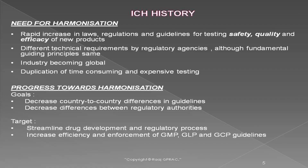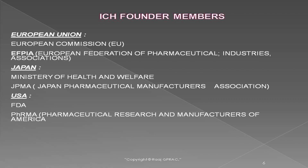The goal was to decrease country-to-country differences in guidelines and between regulatory authorities. The target was streamlined drug development and regulatory processes, and increased efficiency in enforcement of GMP, GLP, and GCP guidelines. GMP is good manufacturing practice, GCP is good clinical practice, GLP is good laboratory practice, and together with GDP — good documentation practice — they are collectively called GXP. The three founder members of ICH are the European Union, Japan, and the USA.